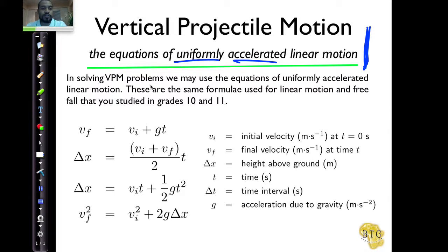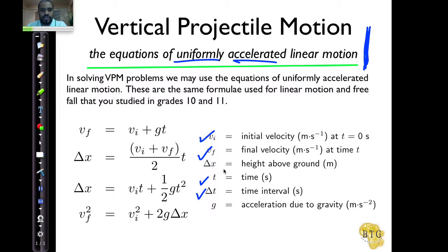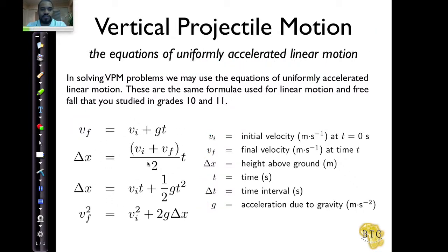In solving vertical projectile motion questions, we will use the equations of uniformly accelerated linear motion. These are the same formulae you used for linear motion and free fall studied in grades 10 and 11. The definitions: VF is final velocity, VI is initial velocity, delta X or delta Y is the height above the ground, T is time, delta T is the time interval, and little g is acceleration due to gravity.